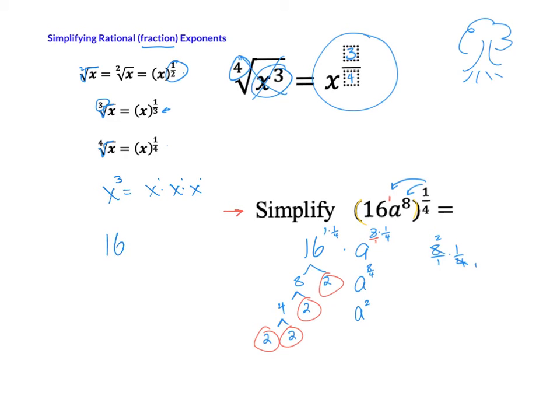So 16 to the 1/4. Remember, the roots are in the bottom. So you're breaking up the roots. The 4 is the root. And it's going to be 2 times 2 times 2 times 2, which is indeed 16. The 1 is telling you how many you want. So I want one of these roots. That means I just want one of them. Or you can say I'm raising 2 to the power of 1, and that gives me 2. So this final answer is going to be 2 times a squared.